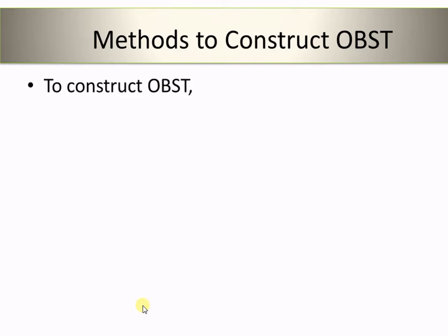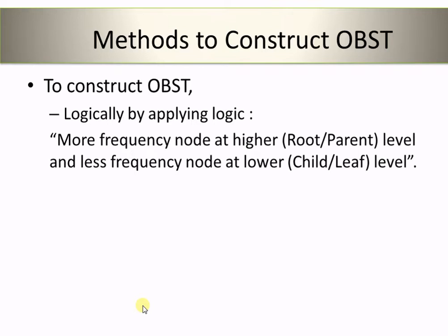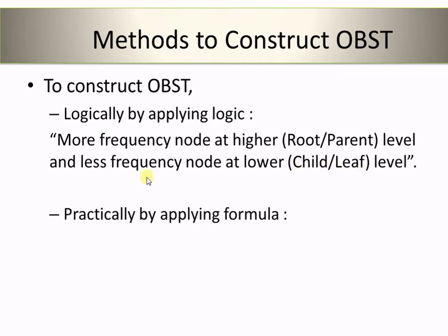Now we will see the methods to construct optimal binary search tree. The first method is the logical method, where we will apply some logic for the construction of optimal binary search tree. The logic is: if the frequency of a node is higher, then that node is going to be made either a root node or a parent node — we will keep that node at the higher level. And if the frequency is less, then we will keep that node at the lower level, that is at the child or leaf level.